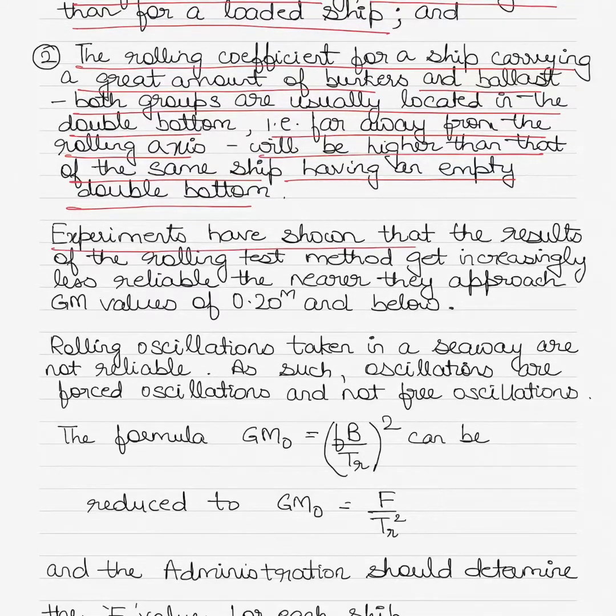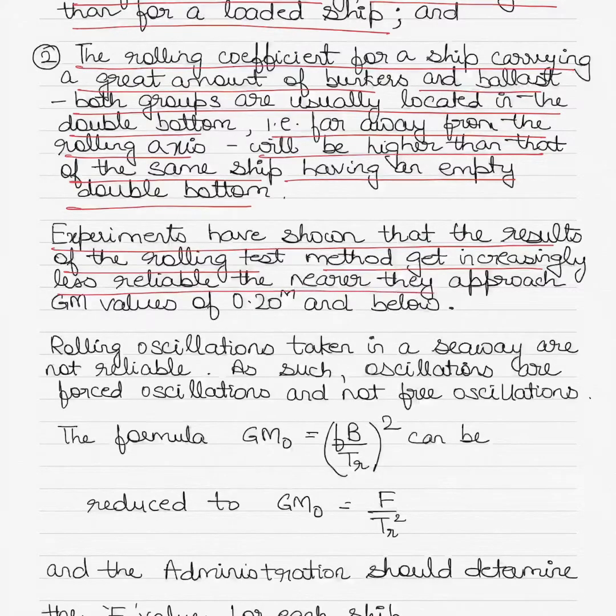Experiments have shown that the results of the rolling test method get increasingly less reliable the nearer they approach the GM values of 0.20 meters and below.